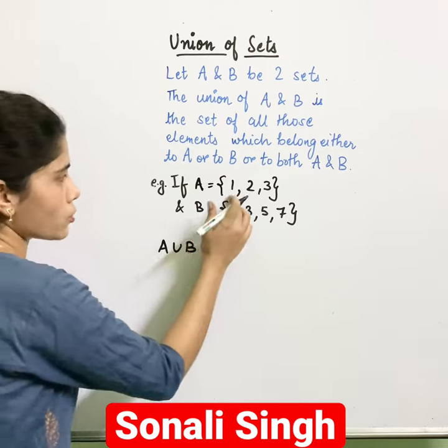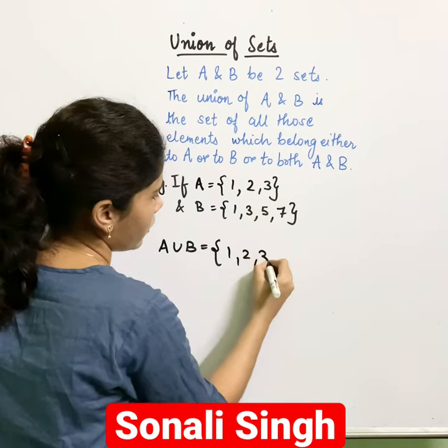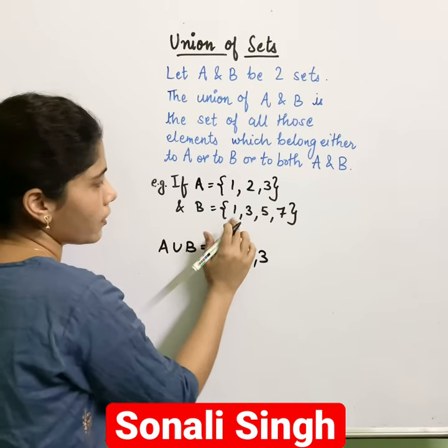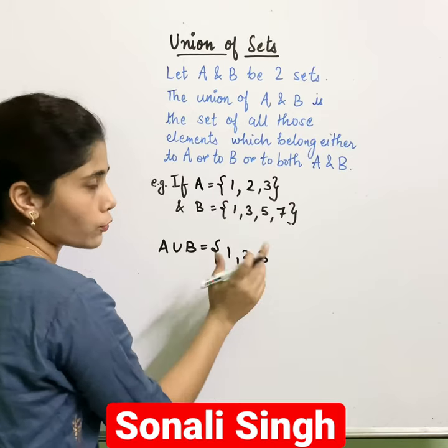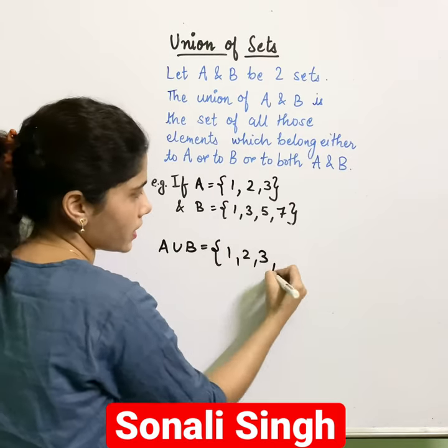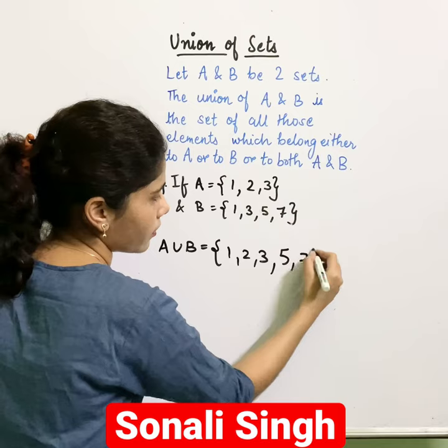Toh, yahaanpere elements kaunse hai? One, two, three. Or yahaanpere elements kaunse hai B set mein? One, three, five, seven. But one and three already likh diya, toh usko dubaara nahi likhenge. Ab, quonsse elements aajayenge? Five and seven.